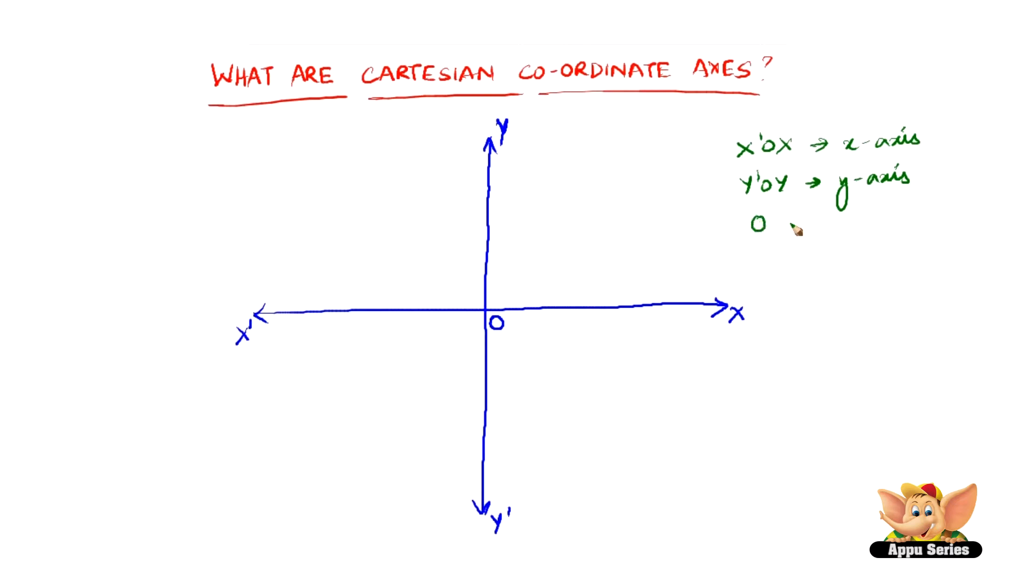And of course the intersection point o is called the origin. Therefore we can say that two lines, x-ox as the x-axis and y-oy as the y-axis, when they intersect at an angle of 90 degrees or when they intersect in such a way that they are mutually perpendicular to each other, and when they are taken together, that is called the Cartesian coordinate axis.